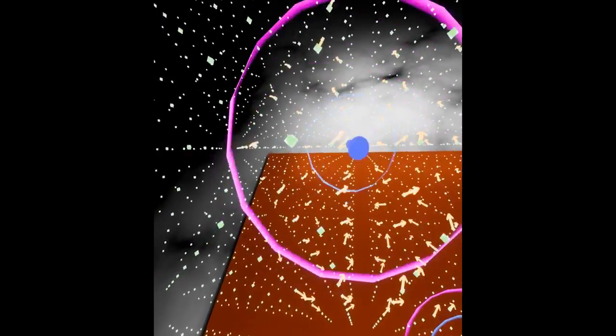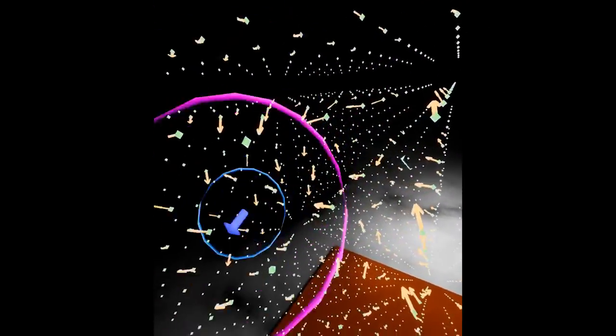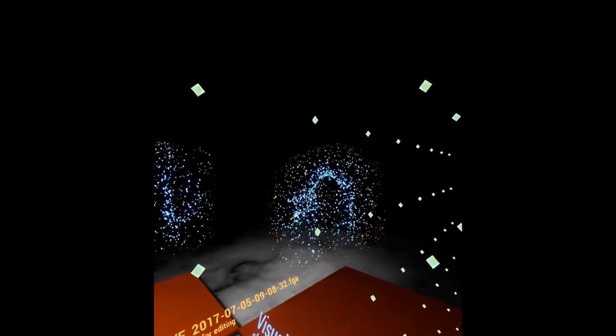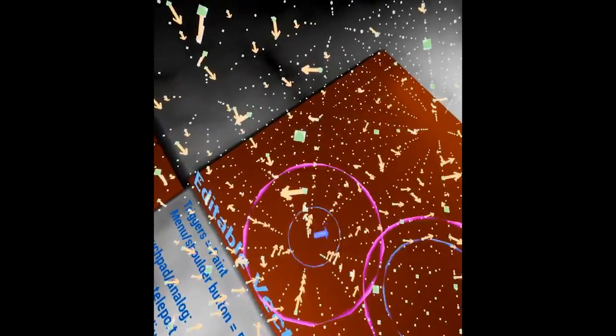Typically, vector fields are painstakingly authored by some arcane Maya process or generator script. That's kind of awkward, but since it's just a big 3D grid of vectors, painting them in VR turns out to be much more intuitive.